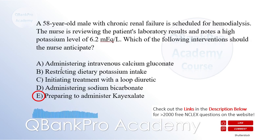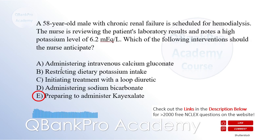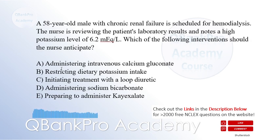Restricting dietary potassium intake, option B, is important in managing hyperkalemia but it alone may not be sufficient in the acute setting. Loop diuretics, option C, are not effective in removing potassium and are more commonly used for fluid overload. Sodium bicarbonate, option D, may be used to manage metabolic acidosis but does not specifically target hyperkalemia.